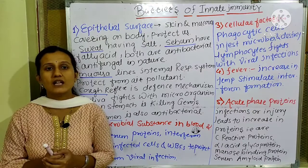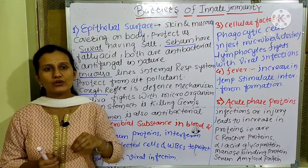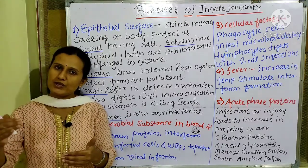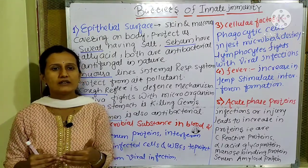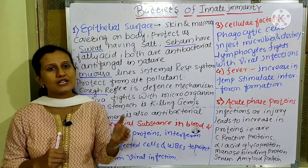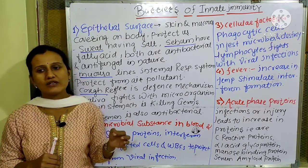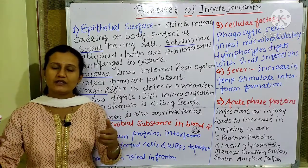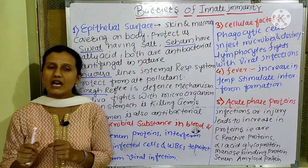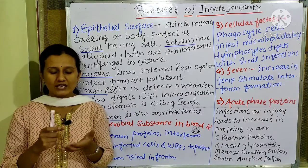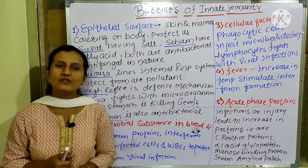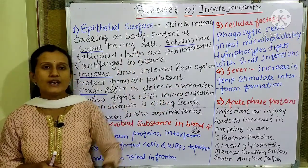When bacteria enter, we may go through antibiotics. When a doctor prescribes antibiotics, they reduce the bacteria and fungus in the body. We also use antipyretic drugs like paracetamol to lower the temperature. Body temperature is one of the factors that helps in the barrier of innate immunity.